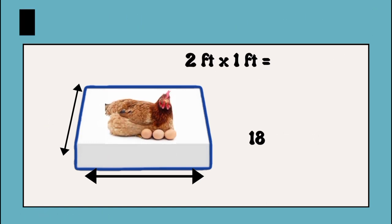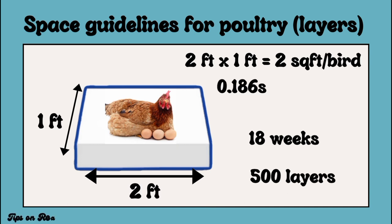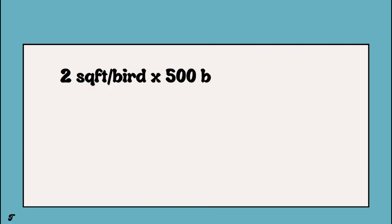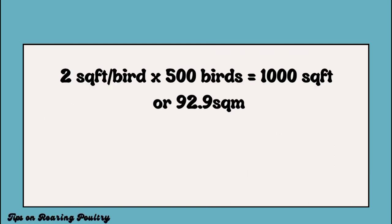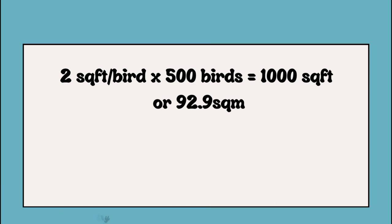If you are planning on raising 500 layer chickens, the size of the house can be estimated like this: if a bird occupies two square feet, we multiply two square feet by 500 birds, which gives us 1,000 square feet, or 92.9 square meters.